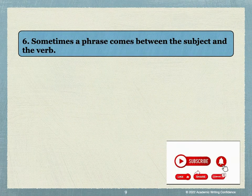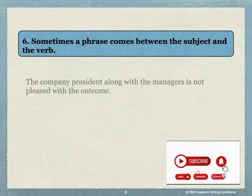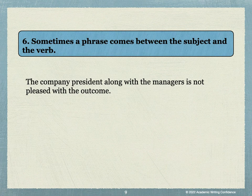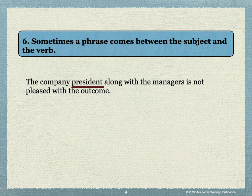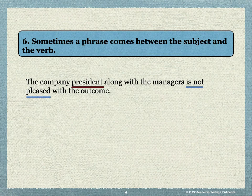Sometimes a phrase comes between the subject and the verb. For example: The company president, along with the managers, is not pleased with the outcome. The subject is the word president. This is followed by the phrase along with the managers. Even though managers is plural, because the subject is president, which is singular, the verb needs to also be singular — the president is not pleased.